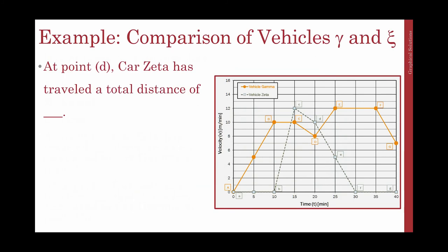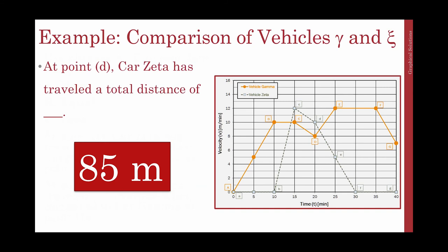At point D, to determine how far car zeta has traveled in total, we have to calculate the area under the graph for car zeta, which turns out to be 85 meters.